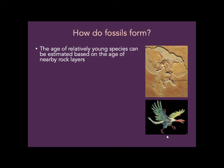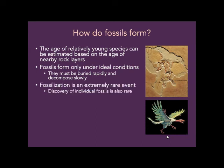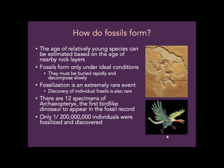We can estimate the age of a fossil based on nearby rock layers. Fossils only form under very particular conditions — a dead animal must be buried rapidly and decomposed slowly — so fossilization is really rare, and it's also really hard to find fossils. There are only 12 specimens of Archaeopteryx, the first bird-like dinosaur in the fossil record. If only 1 in 200 million individuals are fossilized and discovered, there were probably far more Archaeopteryx that didn't get preserved.